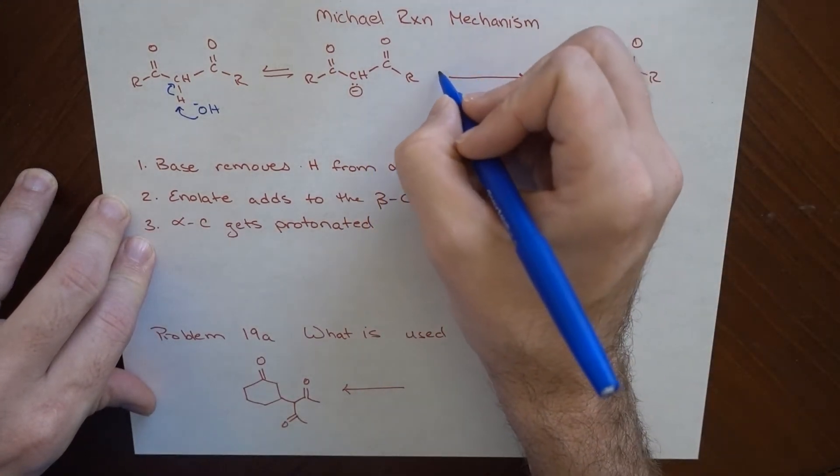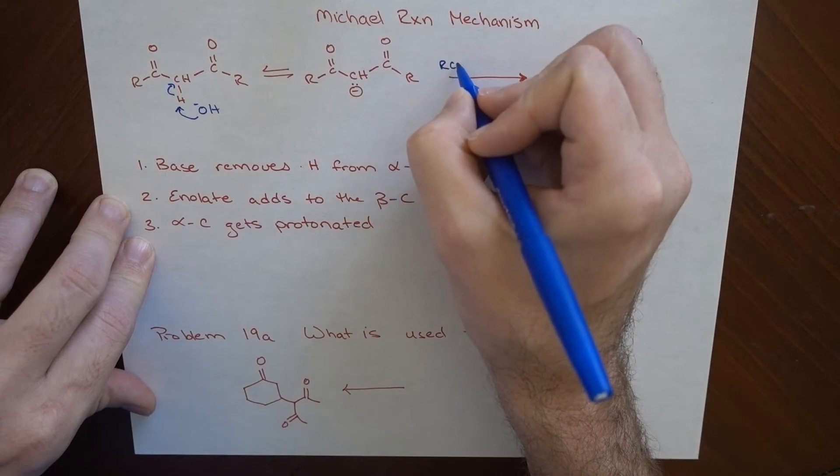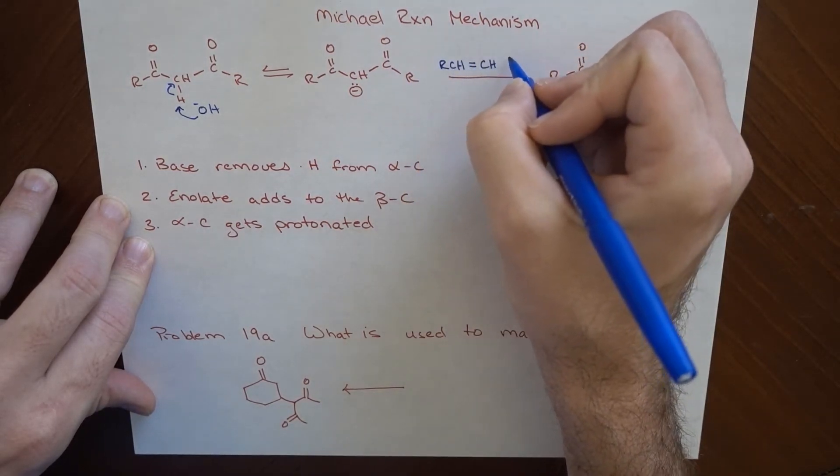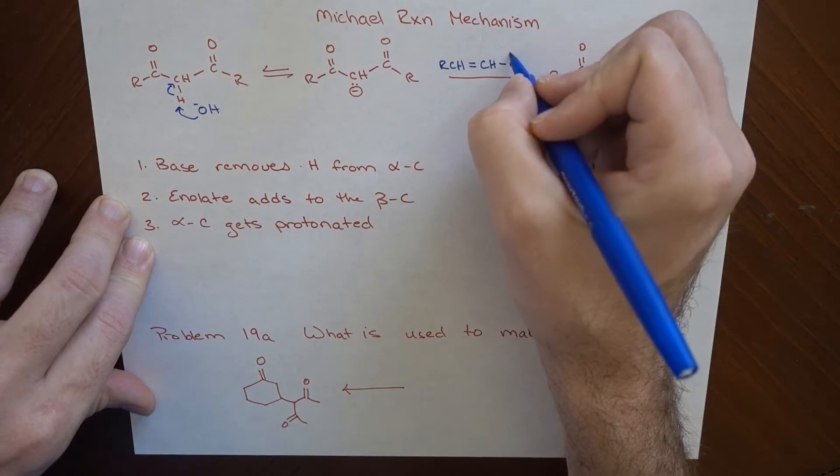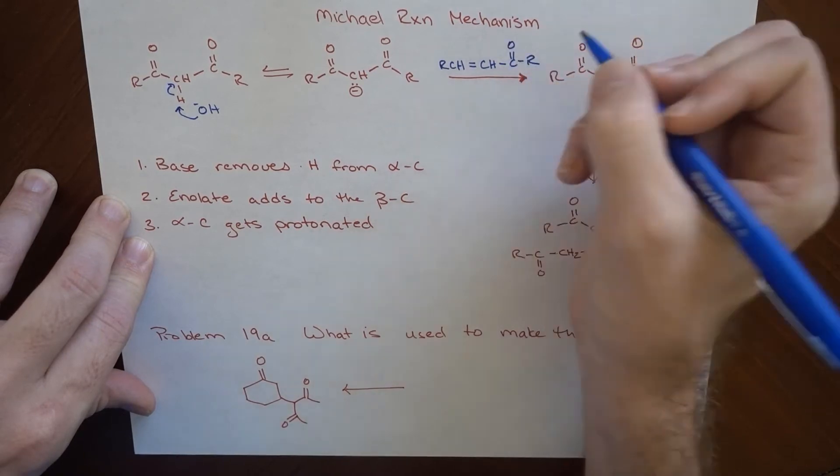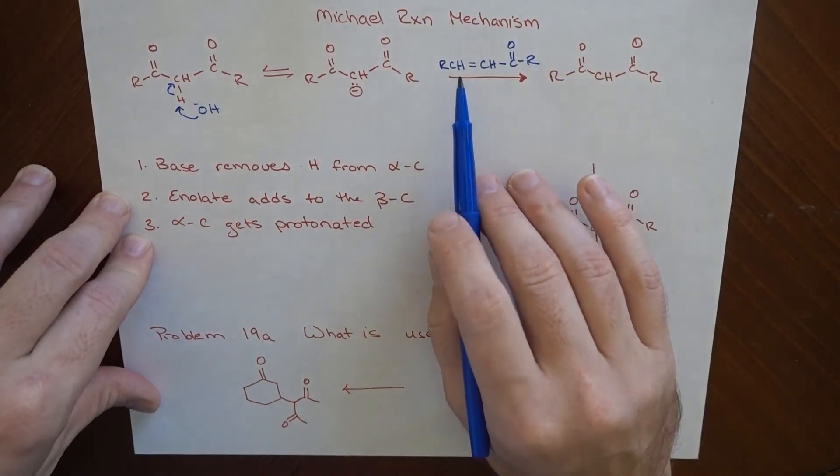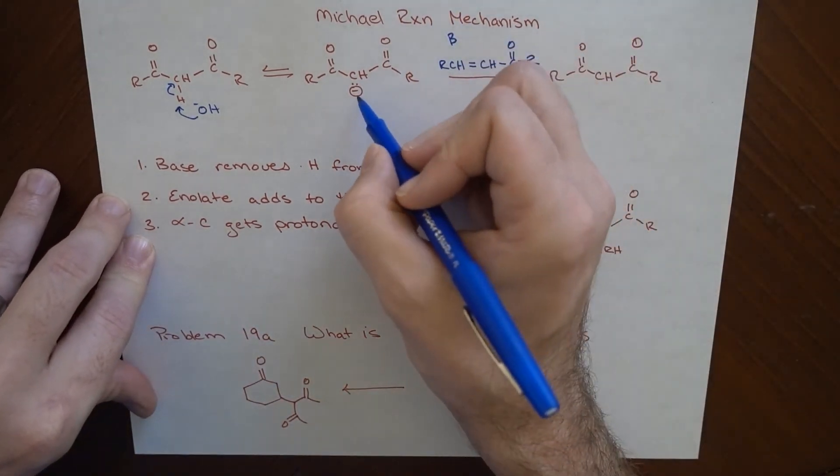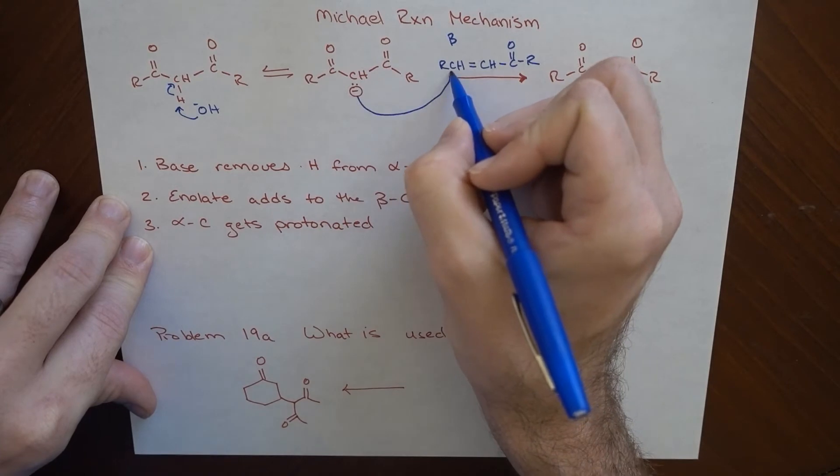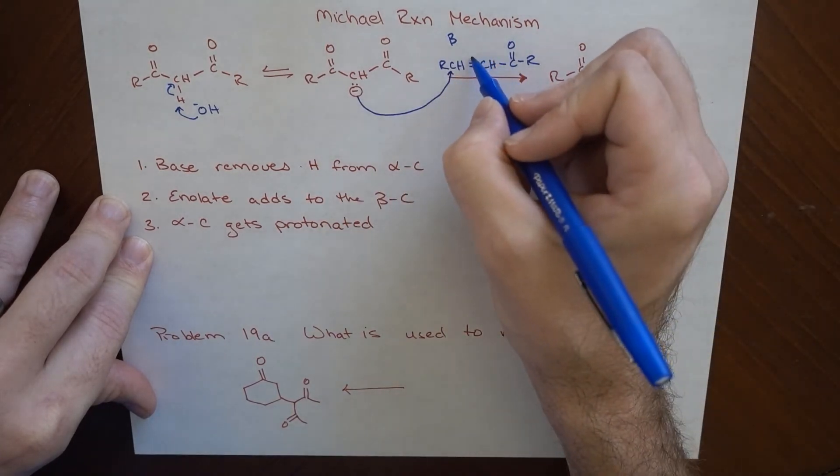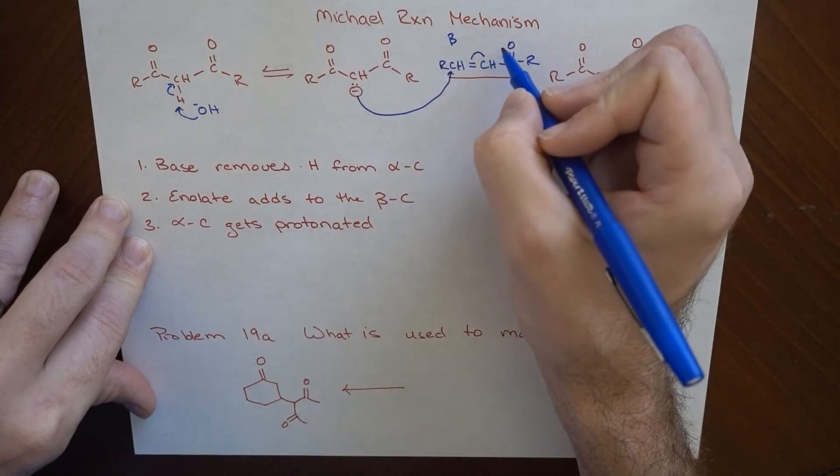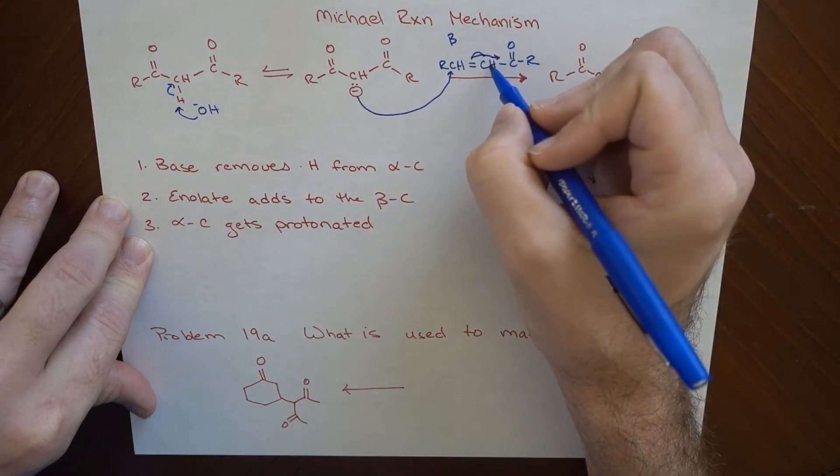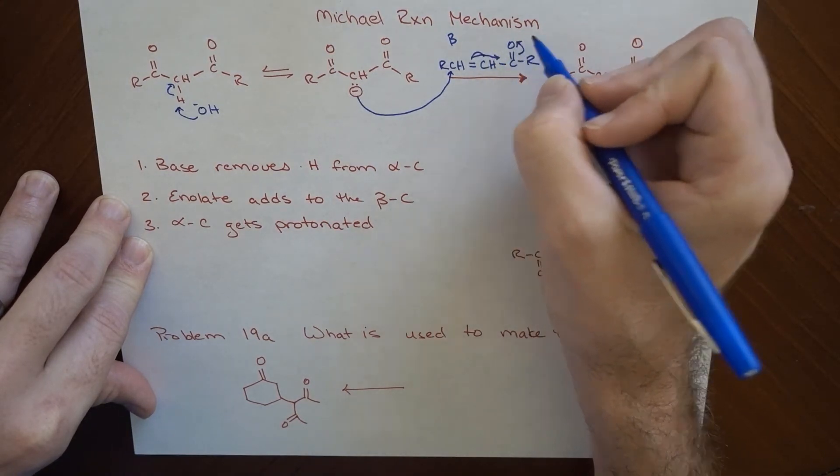So we've got some other compound here. So we've got RCH, which is doubly bound to a carbon, CH, which is singly bound to a carbonyl R. So there is our thing that's got a beta carbon on it. That's the beta carbon there. That's the one that we're interested in. So these electrons are going to attack at that beta carbon. These electrons are going to go over here to the bond between this carbon and this carbon. These electrons are going to be kicked up here to the oxygen.